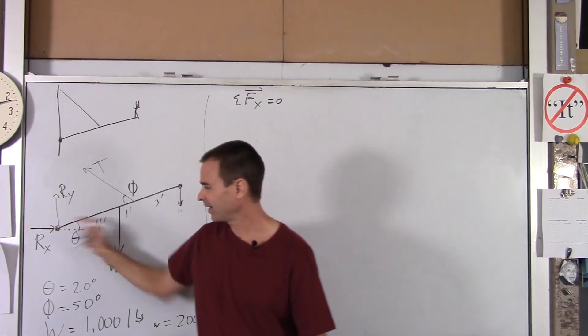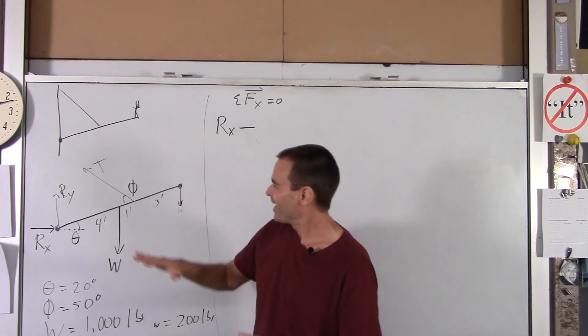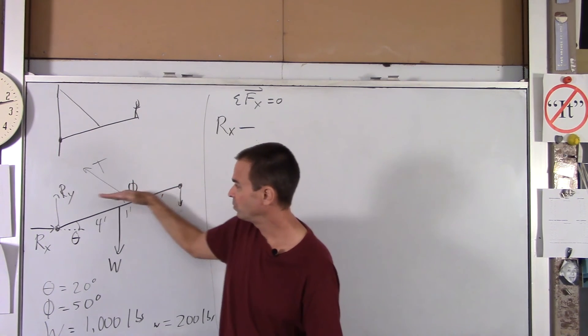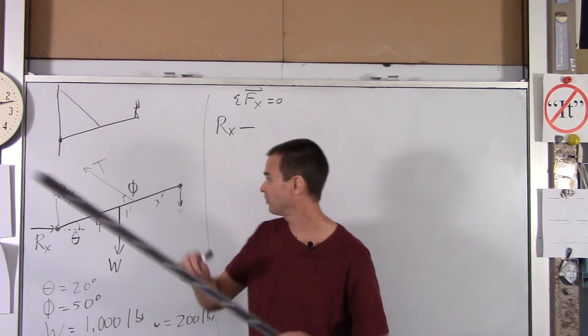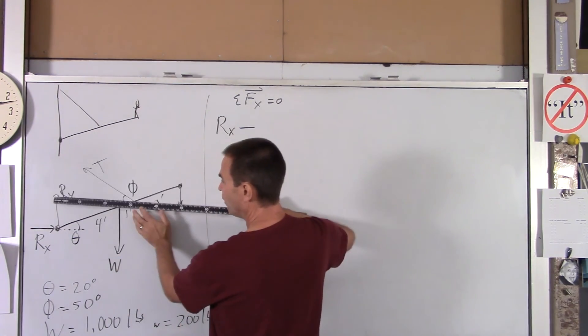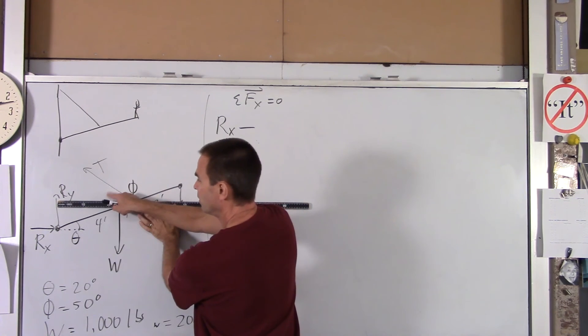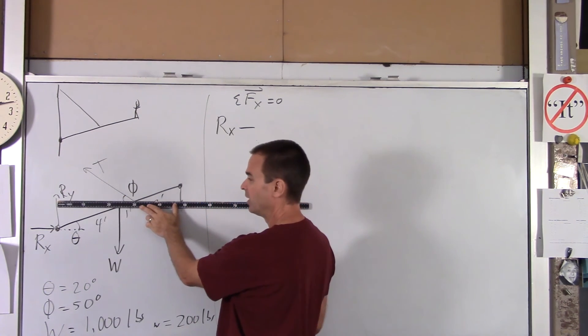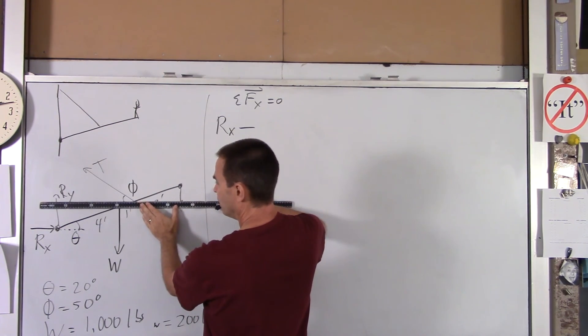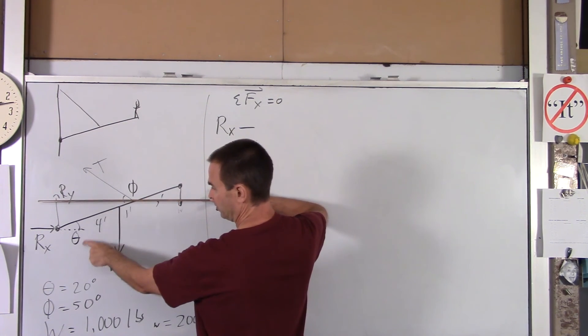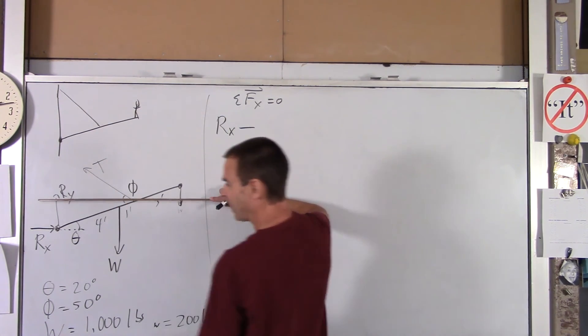So if you do net force in the x direction equals 0, well, there's only two forces here. You've got Rx pointing to the right. Now here's the tricky part. You've got a component of tension pointing to the left. How do you calculate that component of tension? Well, if you look carefully here, the angle that we're going to use is not phi. We want to know this angle here with the vertical. Well, I hope you kind of maybe see it. If this angle is phi, we know that that angle is theta, alternate interior angles for parallel lines. So this angle here is phi minus theta.